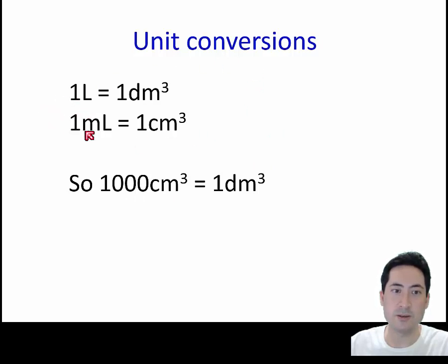So one mole of gas gives us 22.7 litres. Make sure you know these well. Sometimes it takes students a while to get used to this. A milliliter is the same as a centimetre cubed. One litre is one decimetre cubed. A thousand centimetre cubed is a decimetre cubed.